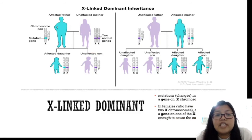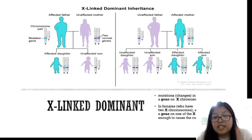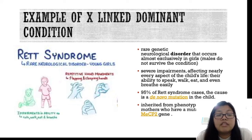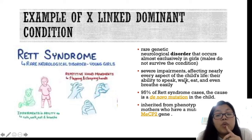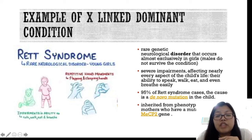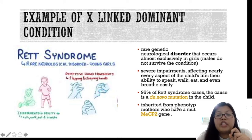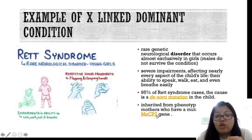The second type is the X-linked dominant trait. For X-linked dominant, even just one copy of the gene in a female means she is affected. For males, of course, they are always affected if they have it on their single X chromosome. An example is Rett Syndrome, a rare neurological disorder characterized by repetitive hand movements — flapping and clasping of hands — that severely impairs the ability to speak, walk, eat, and even breathe easily. 95% of Rett Syndrome cases are caused by de novo mutation, meaning it started in the child.